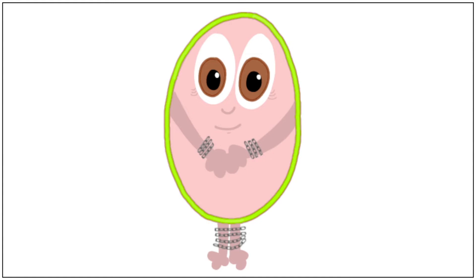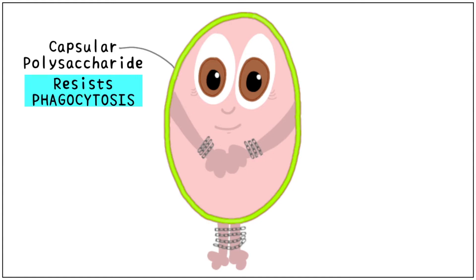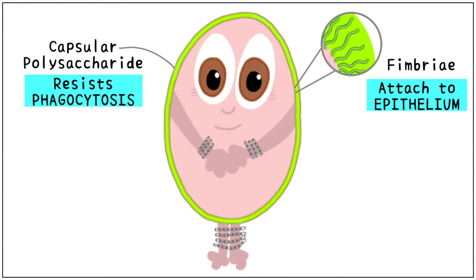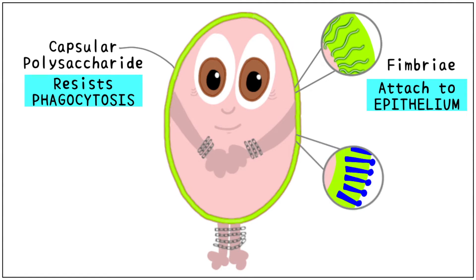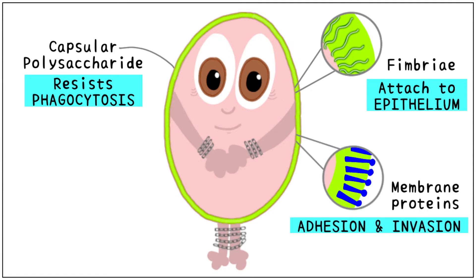The first virulence factor is its capsular polysaccharide which helps the organism to resist phagocytosis. The second is the presence of tiny fimbriae which help the organism attach to our respiratory epithelium. The third factor is the presence of membrane proteins, which help in the adhesion and invasion of our cells.